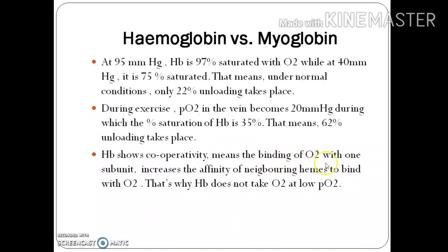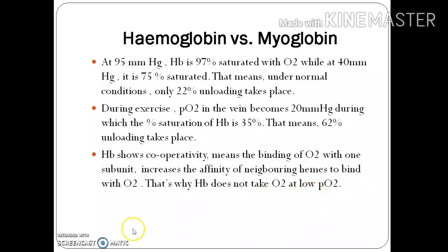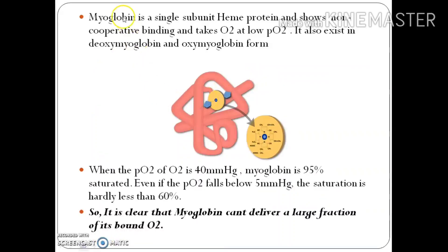Hemoglobin shows cooperativity — it has four subunits, so when an oxygen molecule binds with one subunit, it increases the affinity of the neighboring hemes, meaning neighboring subunits, to bind with oxygen. That's why there must be sufficient oxygen so that every subunit can bind with it, and that's why hemoglobin does not take oxygen at low partial pressure.